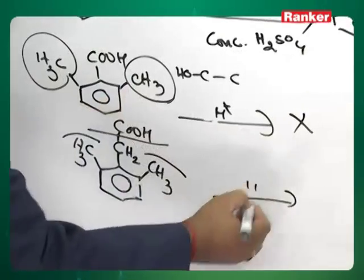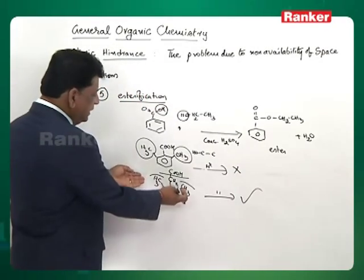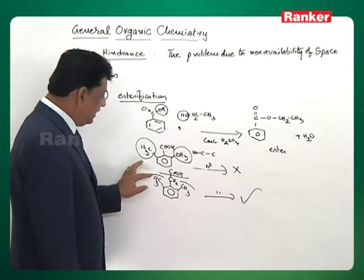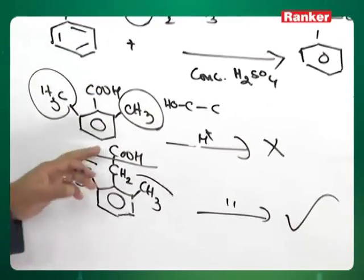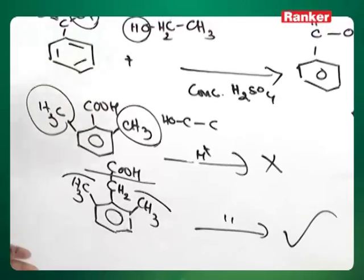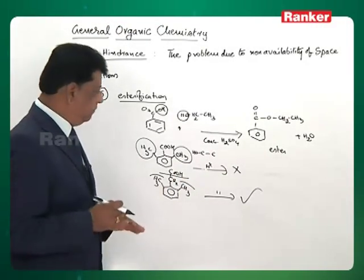Therefore, once again the same reaction if you do it, the reaction is taking place. If this methyl size is increased again, ethyl and ethyl reaction is again found to be less. When this is increased, the reaction takes place. When the side group size is increased, the reaction is decreasing.